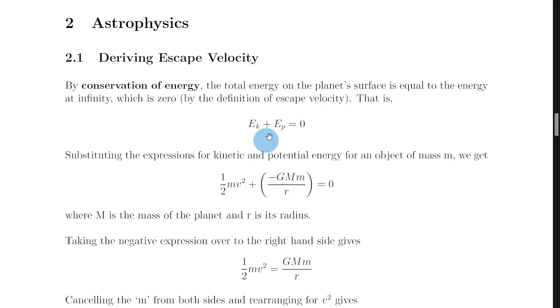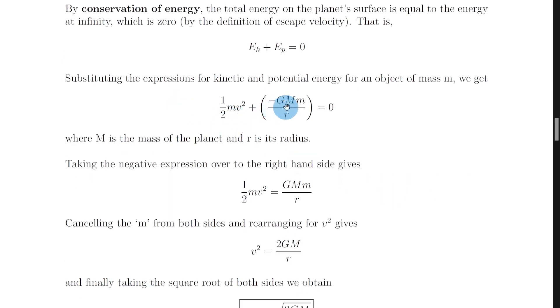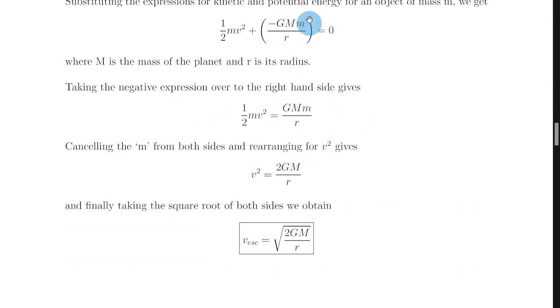What you then want to do is substitute in the two expressions for kinetic energy and gravitational potential energy from the relationship sheet to get a half mv squared plus minus GMm over r is equal to zero. And then you can add this term over to the right hand side to get a half mv squared is equal to GMm over r.